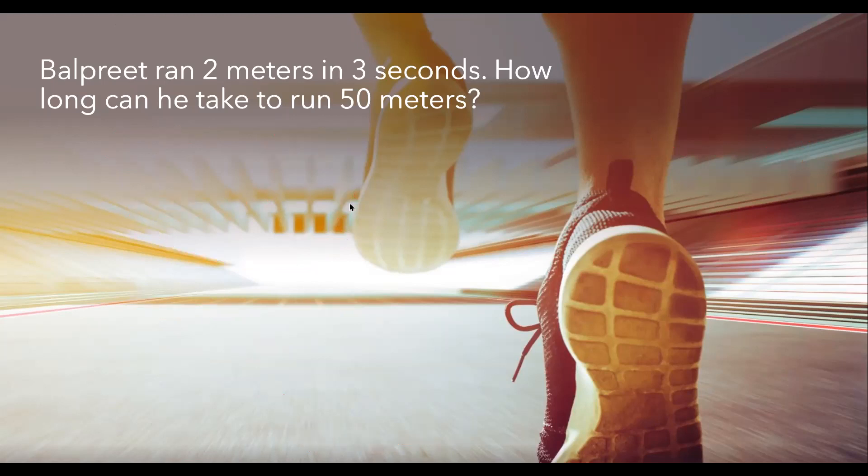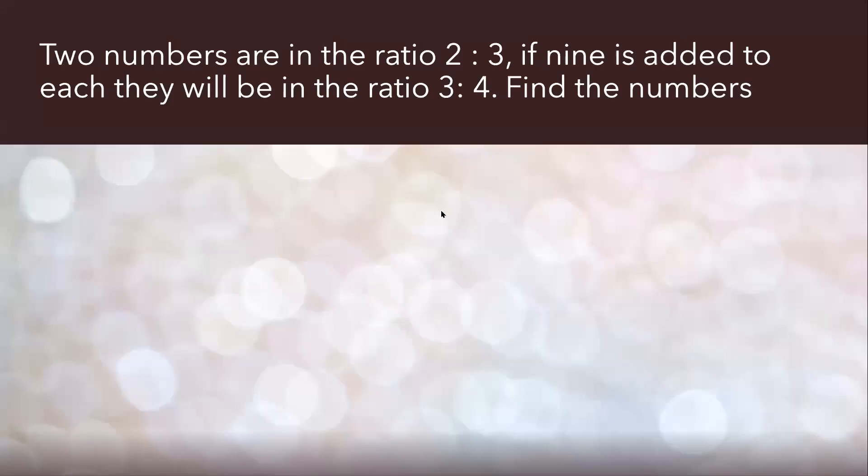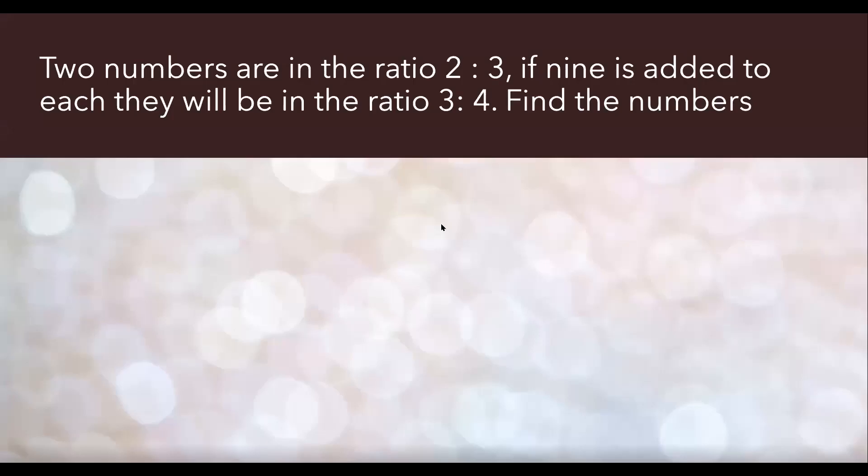After this, we have another question. Let's check this out. Here it says that two numbers are in the ratio 2 is to 3. So let's first write that down. 2 is to 3 is the given ratio.